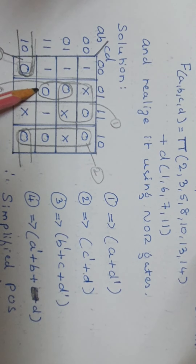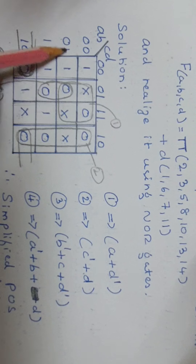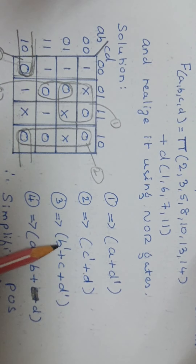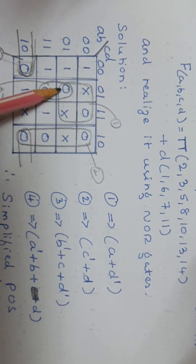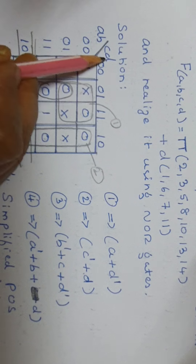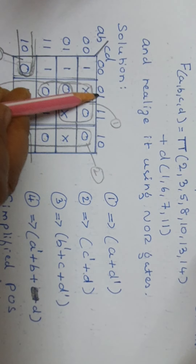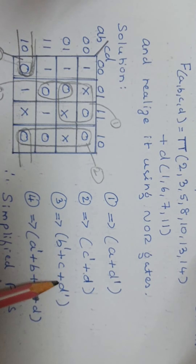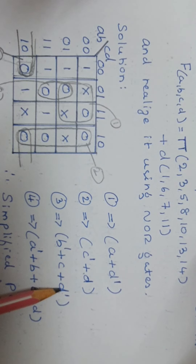With respect to group 2, all 4 come in 4 rows so nothing is common row wise. Column wise, they fall in a single column where C is 1 and D is 0. Hence the term is C dash plus D. For group 3, this pair has row wise B as 1, so B dash is written. Column wise, C is 0 and D is 1, so C plus D dash. The term is B dash plus C plus D dash.